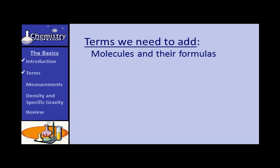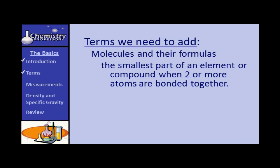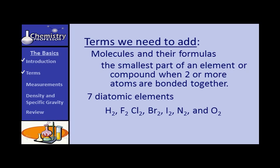Molecules and their formulas. A molecule is the smallest part of an element or a compound when two or more atoms are bonded together. Are you surprised that I put 'element' in here? A molecule can be the smallest part of an element that occurs naturally. Do you remember the seven diatomic elements? Hydrogen, fluorine, chlorine, bromine, iodine, nitrogen, and oxygen — when they occur naturally, they occur as two atoms bonded together. Sometimes sulfur is written as S8, and phosphorus is indicated by P4 when four atoms make up a molecule.